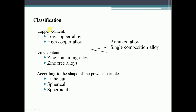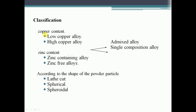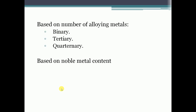Classification of amalgam: according to copper content — low copper alloy and high copper alloy. According to zinc content — zinc-containing alloy and zinc-free alloy. According to alloy type — admixed alloy and single composition. According to shape of powder particles — lathe cut alloy, spherical alloy, and spheroid alloy. Based on number of alloying metals — binary, tertiary, and quaternary. Also classified based on noble metal content.